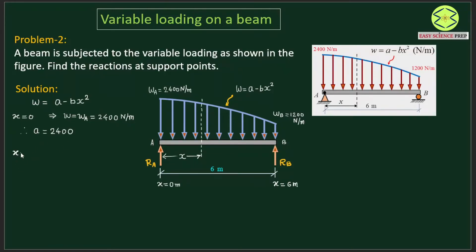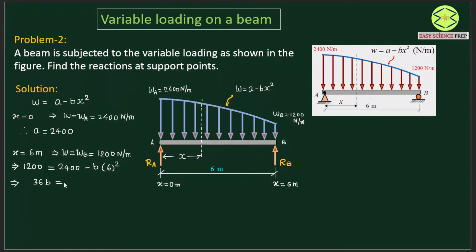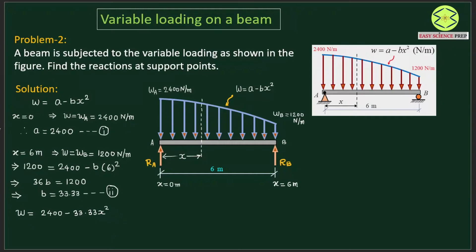Similarly, when x equals 6 meters, the load intensity WB equals 1200 newtons per meter. Substituting into the equation: 1200 equals 2400 minus B times 6 squared, which gives 36B equals 1200, so B equals 33.33. Therefore the expression for load intensity is W equals 2400 minus 33.33x squared, and this is the expression we are going to use.